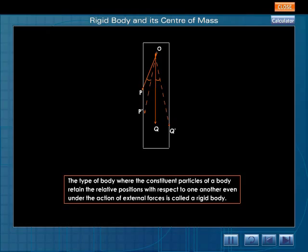A rigid body can possess both rotational as well as translational motion.